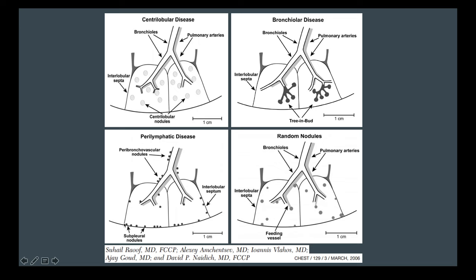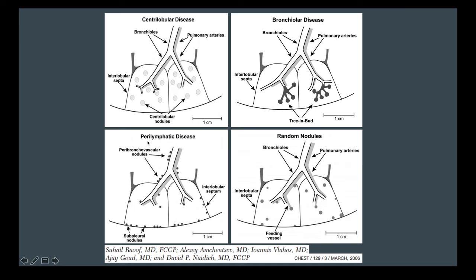In the previous video, I mentioned that the interlobular septa contain the pulmonary veins and lymphatics, but lymphatics can also be found in the axial interstitium, which includes the bronchi and the pulmonary artery. So even though these are centrilobular structures, if you see multiple nodules studding the bronchi or the pulmonary artery, that's still considered perilymphatic disease.